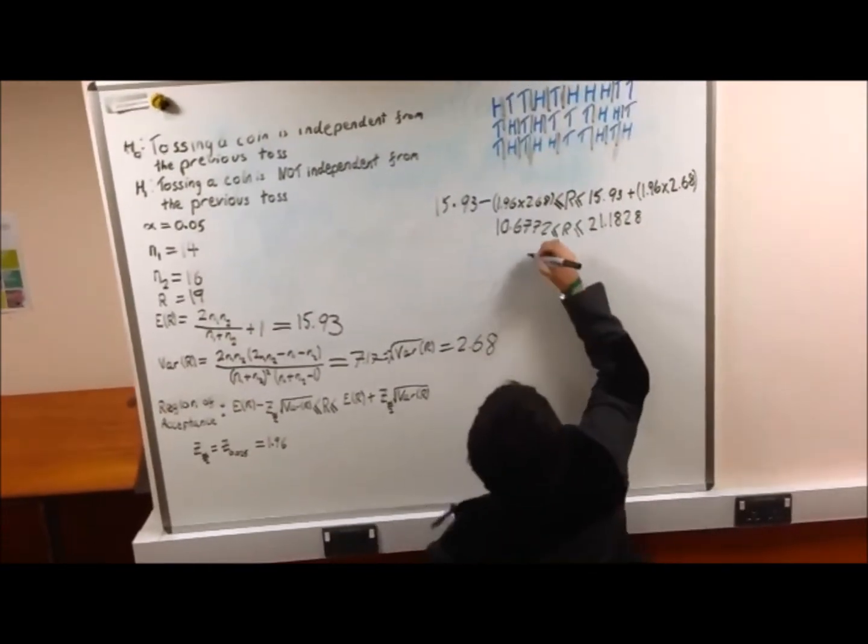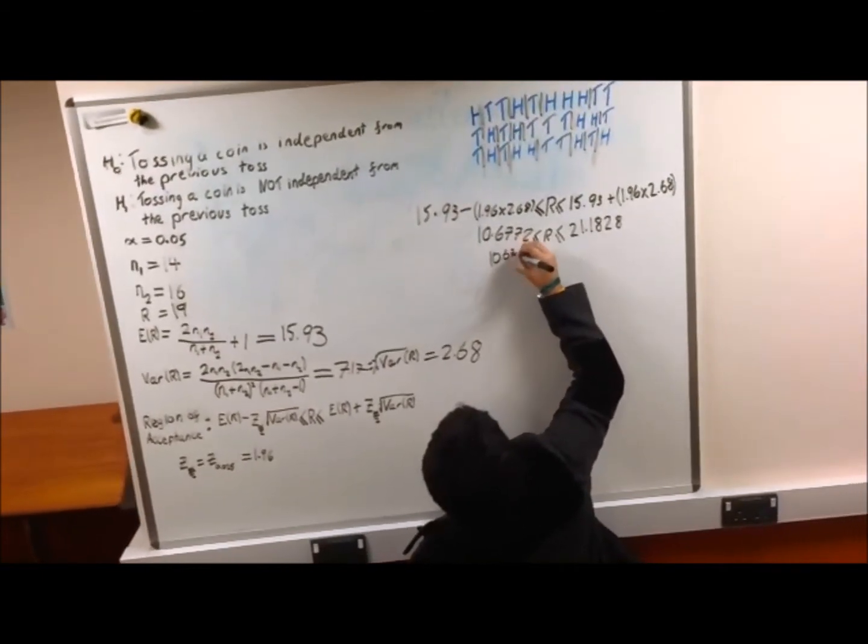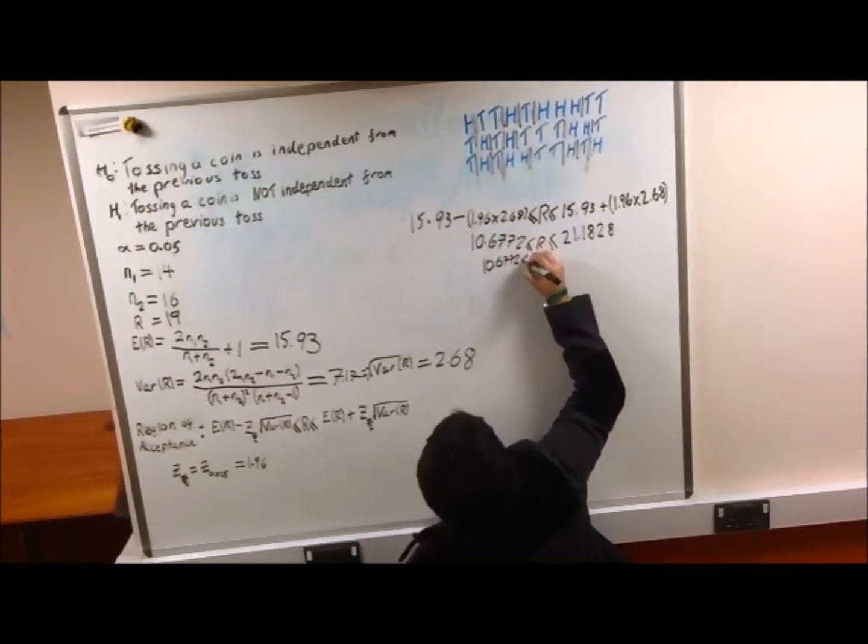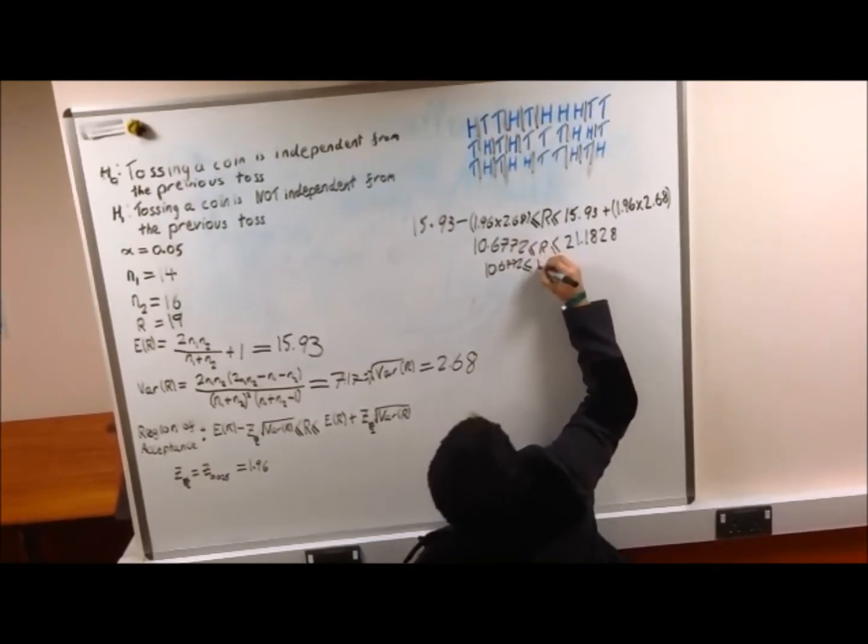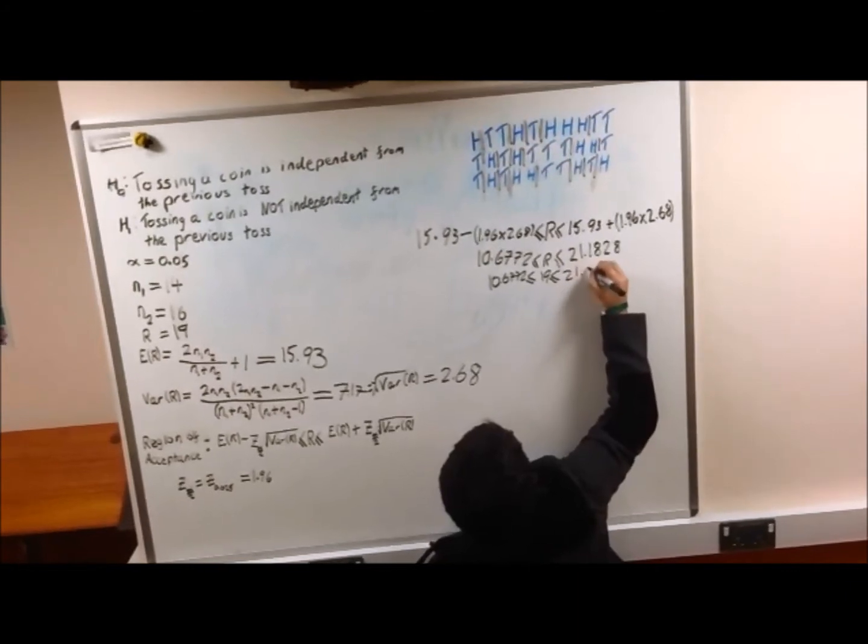Since our value of R lies between the region of acceptance, since 19 lies between the value, there is no evidence to reject the null hypothesis.